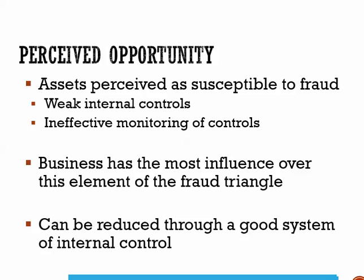The final portion of the fraud triangle is perceived opportunity — when an individual who commits fraud must perceive that an opportunity exists to commit the fraud, conceal it, and avoid punishment. An opportunity is often perceived when there is easy access to assets or when assets are poorly accounted for. Out of the three elements, a business can have the most influence over perceived opportunity. If we can remove this part of the fraud triangle, we can prevent some fraud.